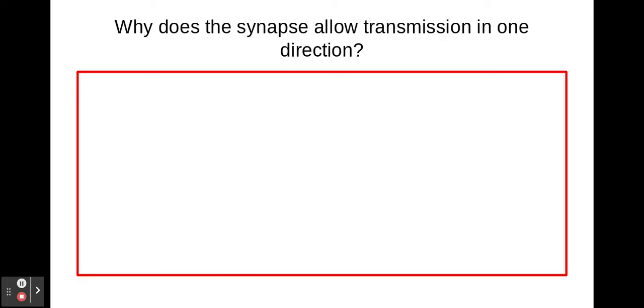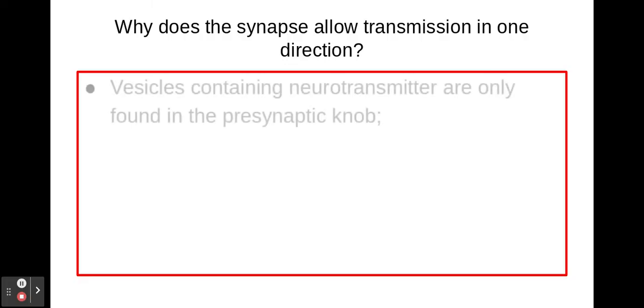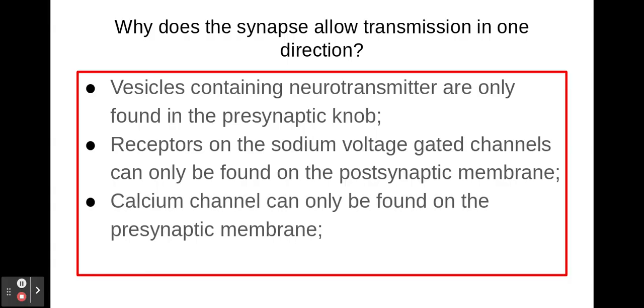Now, this is what I mentioned just then in terms of why synapses only allow transmission in one direction. And there are several things here. Again, this is taken directly from the MART scheme. So it is in a red box.